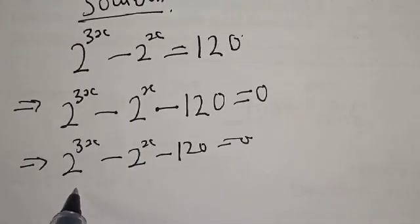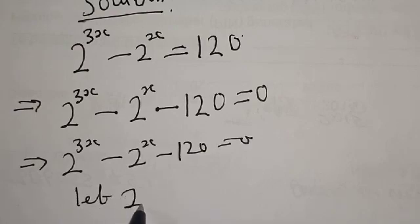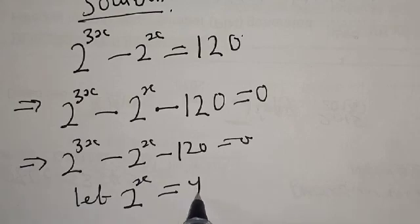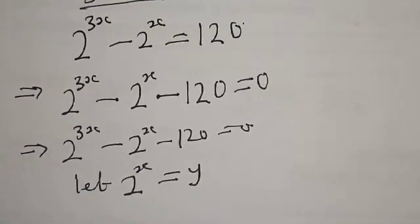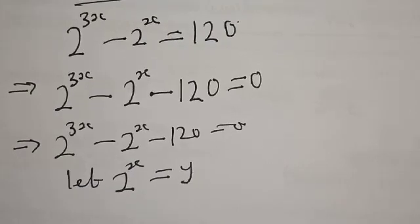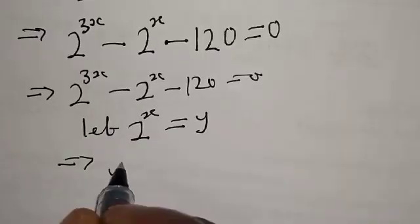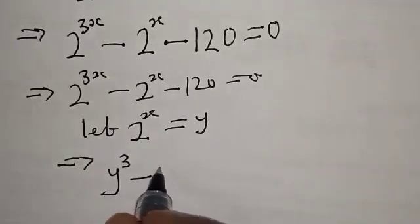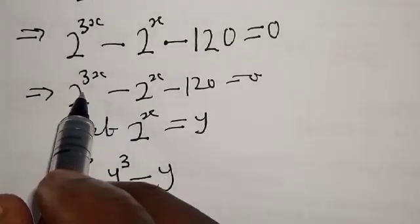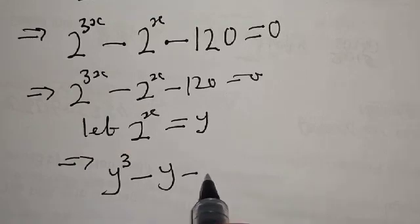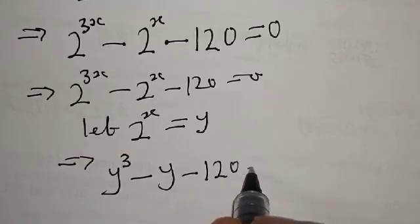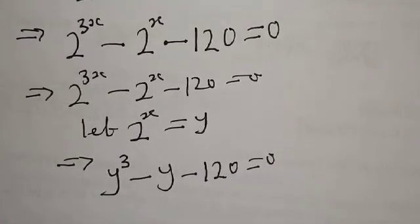Let 2 raised to power x be equal to y. That is, anywhere you see 2 raised to power x, you put y there. This implies that y raised to power 3 minus y minus 120 is equal to 0.